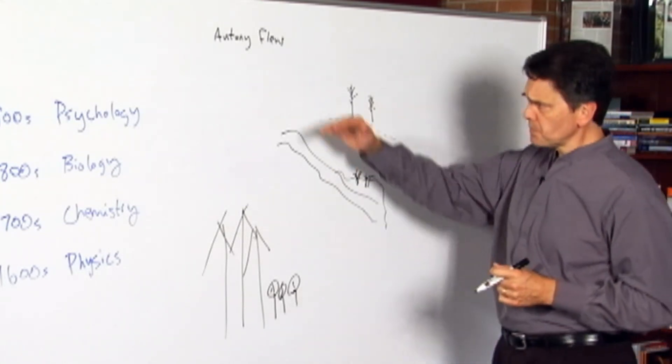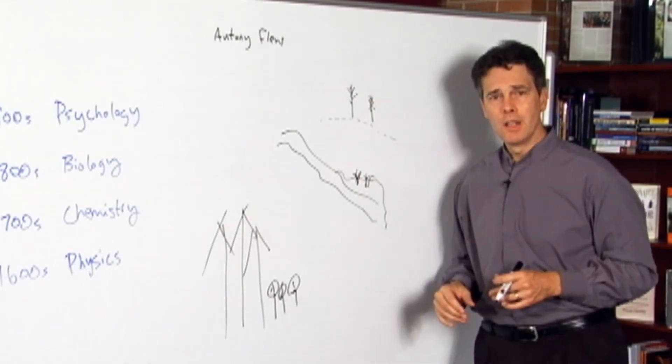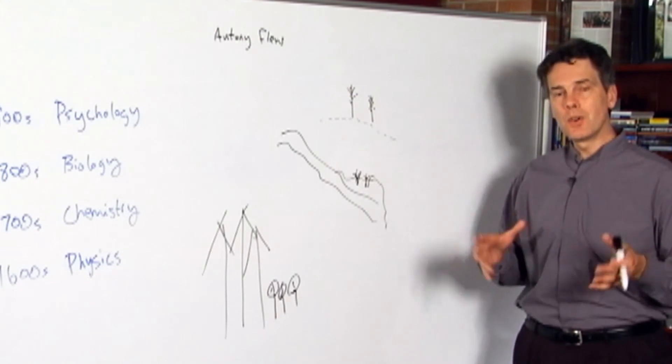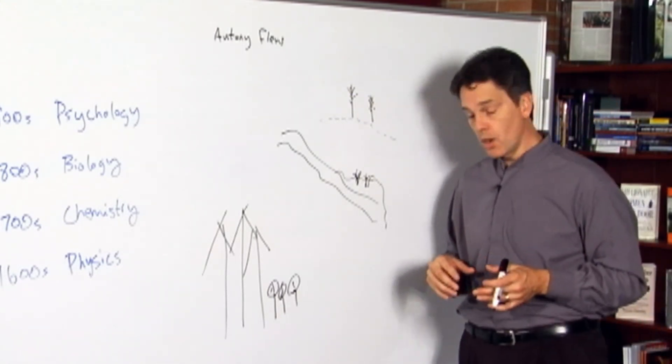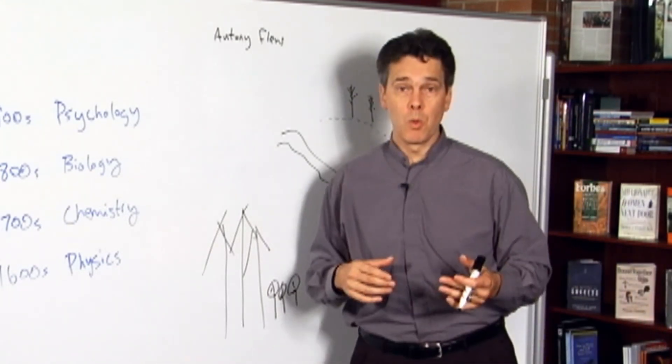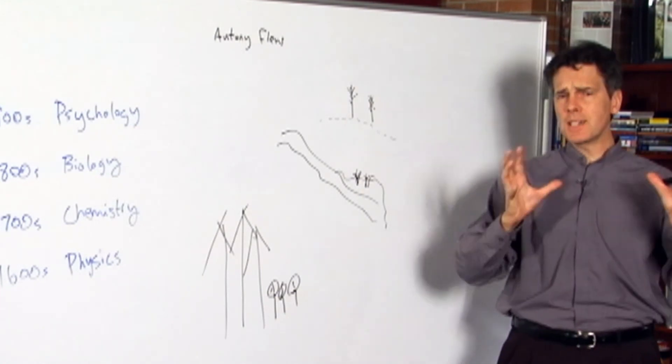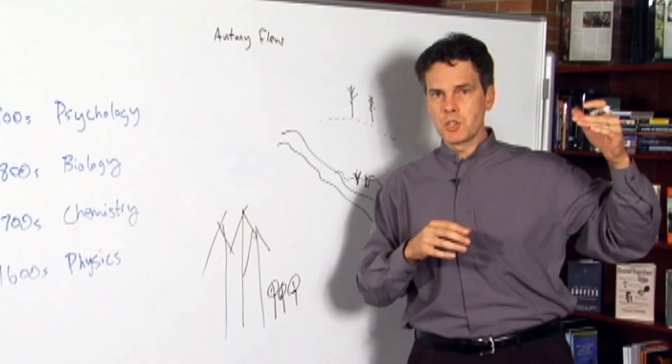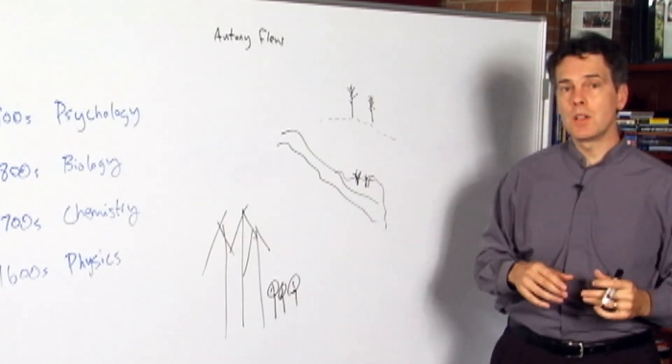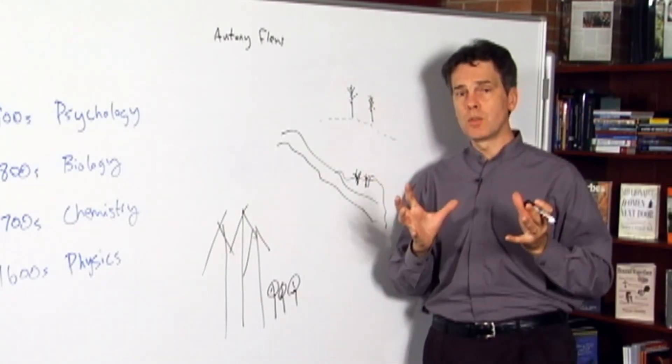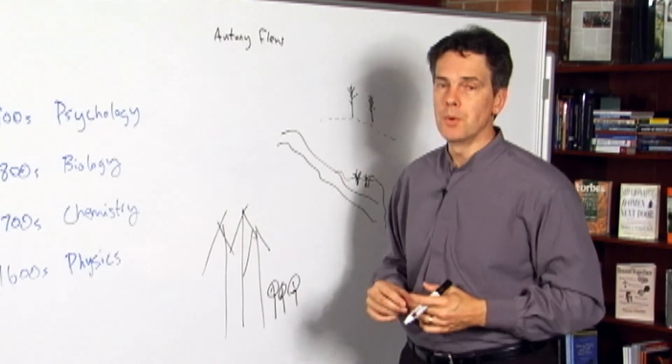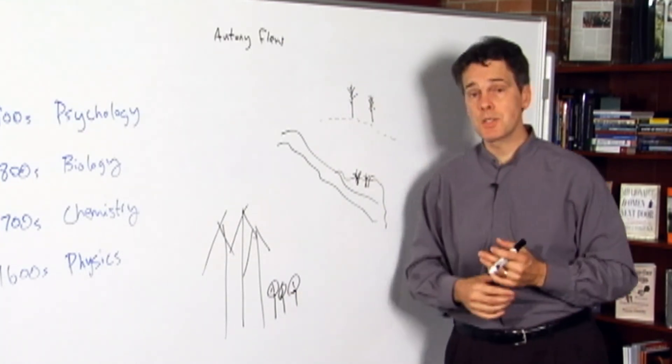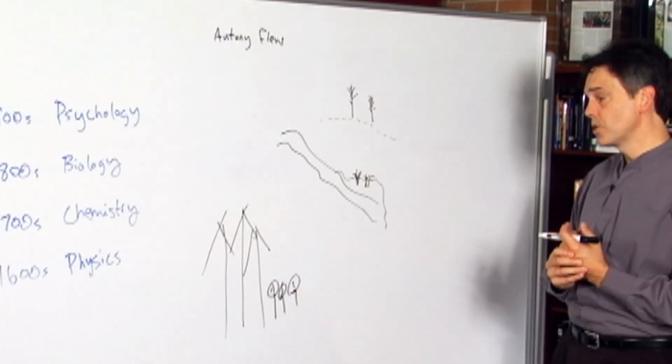All right, so what we have here in Anthony Flew's story is a scaled down version or an allegorical version of the argument from design, where one side is arguing, given the complexity of certain kinds of natural phenomena, there must be an intelligent orderer behind it and the other arguing that complex natural phenomena can evolve through unintelligent processes that are purely naturalistic here.